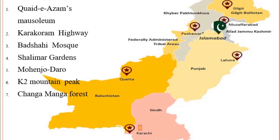The Karakoram Highway is located in Khyber Pakhtunkhwa, so we will write number two in that province. Then we have Badshahi Mosque and Shalimar Gardens — both are located in Lahore, so we will write number three and number four near Lahore. Then we have Mohenjo-daro, the ancient site located in Sindh, so in Sindh province we will write number five.